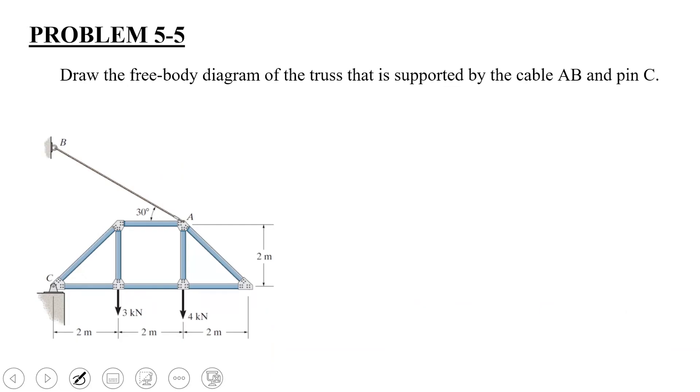Moving forward to problem 5-5, in which a truss is given to you. This truss is being supported at point C by a pin joint and at point A by a rope. So you need to draw the free body diagram of this truss. The truss is given to you with this point C on the pin.